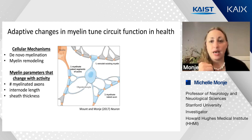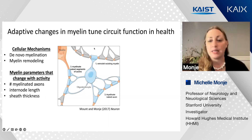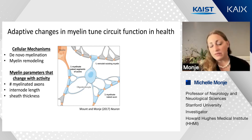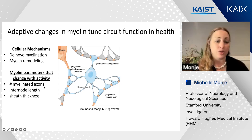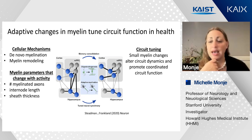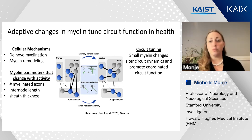Adaptive changes in myelin can tune circuit function. The cellular mechanisms of myelin plasticity include both de novo myelination of previously unmyelinated axons or axon segments, as well as myelin remodeling by existing oligodendrocytes—either extending or retracting myelin internodes or changing the thickness of myelin. We can quantify these changes by looking at the number of myelinated axons, which reflects de novo myelination, as well as measuring internode length and myelin sheath thickness. These relatively subtle changes can have important functional effects, promoting coordinated circuit function.